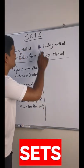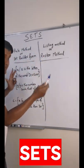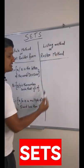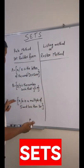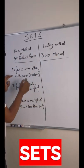Hello everyone, welcome to the YouTube channel. Today we will talk about sets. There are two methods: rule method and listing method. Let's see the difference between them. The rule method is where you have to describe the sets.